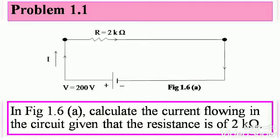Problem 1.1. There are two diagrams in problem 1.1. Let's solve for the first diagram. In figure 1.6a, calculate the current flowing in the circuit given that the resistance is of 2 kilo ohm. Note down the figure. There's a voltage of 200 volts, a current flowing I, and the resistance is 2 kilo ohm.